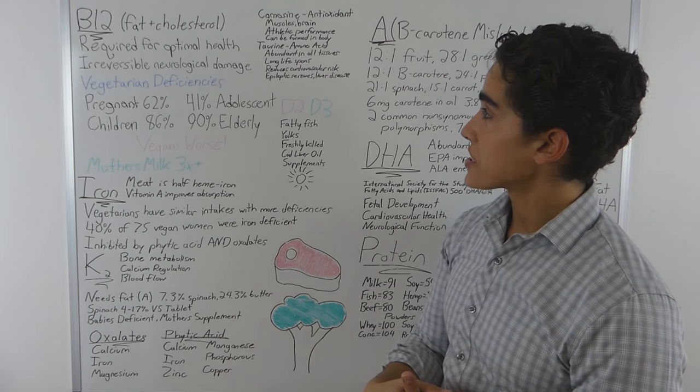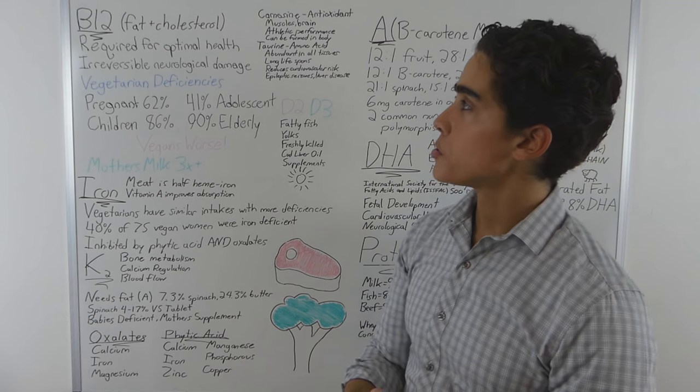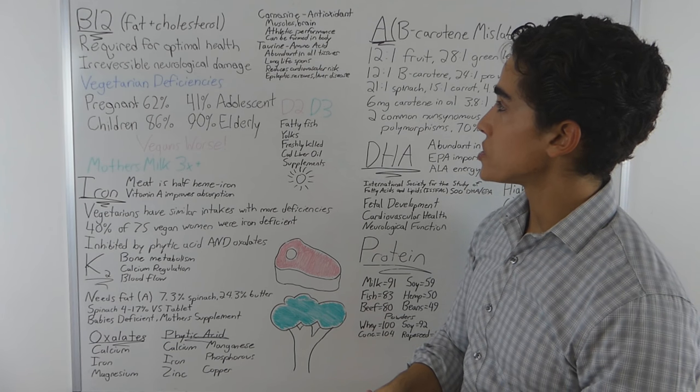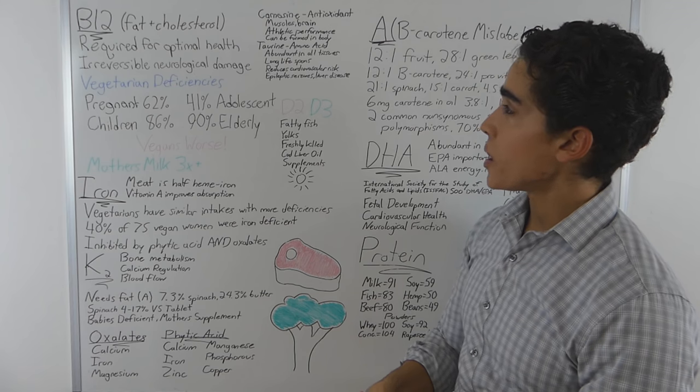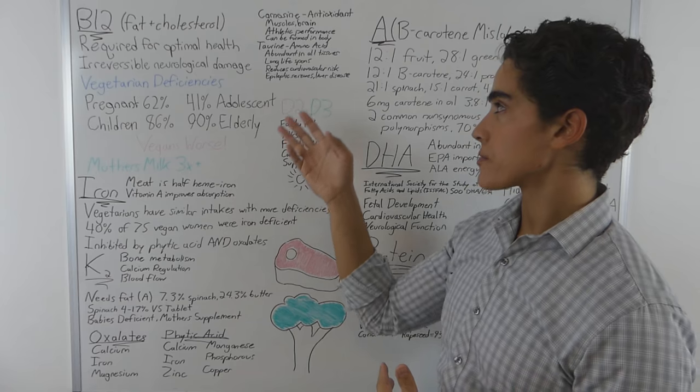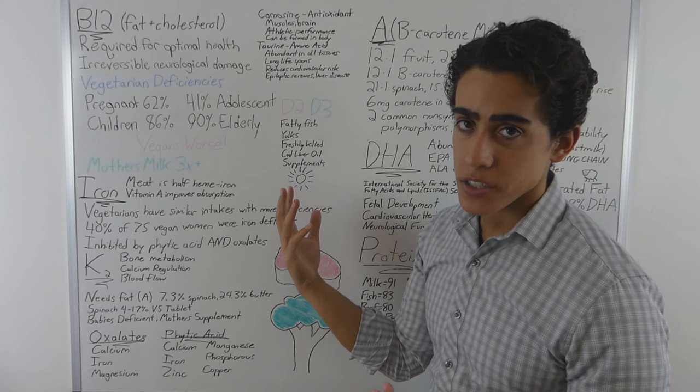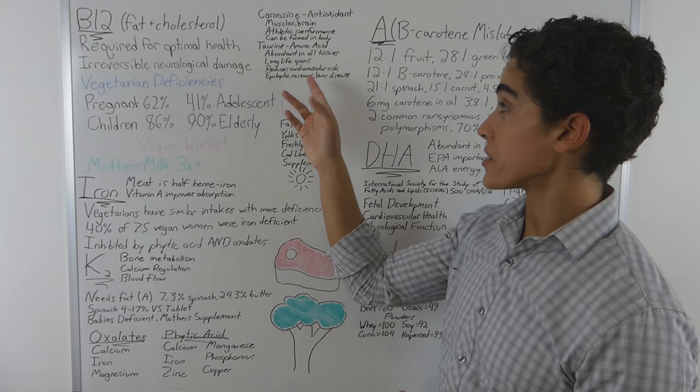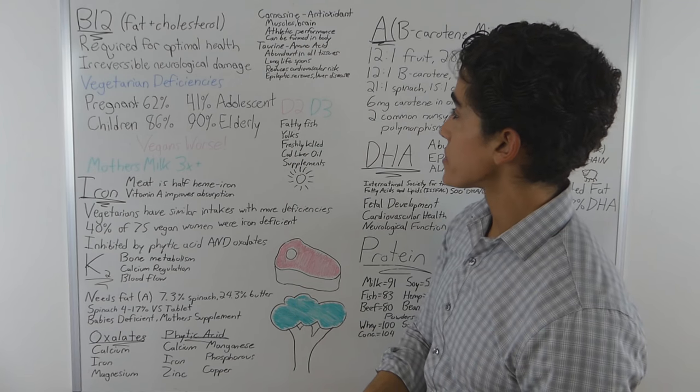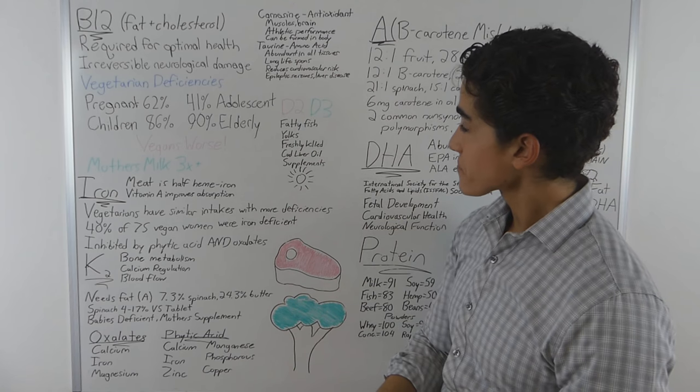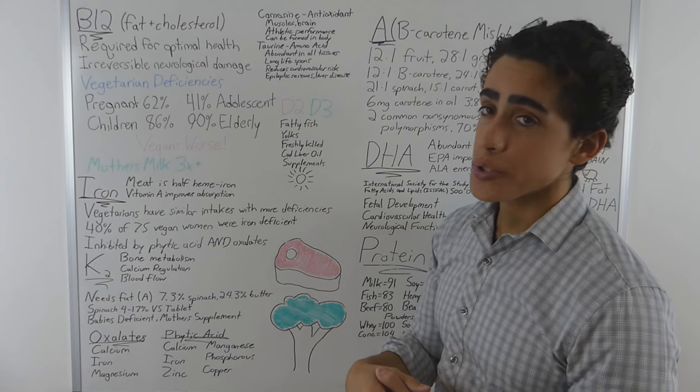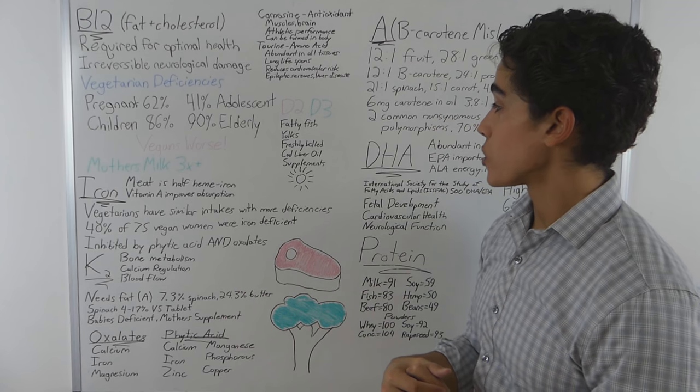Carnosine and taurine are two things that are only contained in animal foods. Carnosine being an antioxidant, abundant in muscle and brain tissue associated with athletic performance, but it can be formed in the body. But again, like the conversion rate, we really need a lot more research on this stuff. So taurine amino acid, it's abundant in all tissues, it's associated with longer lifespans, reduces cardiovascular risk, and it is currently being used to treat epileptic seizures as well as liver disease.